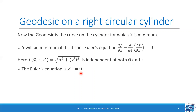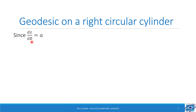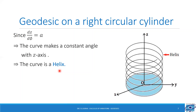To find z, we integrate twice. On integrating twice, we get z = aφ + b, where both a and b are constants. Since z″ = 0, on integrating once we get z′ = constant. But z′ = dz/dφ = a, a constant. Since dz/dφ is constant, the curve makes a constant angle with the z-axis. Since the curve makes a constant angle with the z-axis, the curve must be a helix — a circular helix running over the surface of the right circular cylinder. Therefore, the geodesic on a right circular cylinder is a helix.